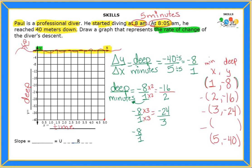I can do one more equivalent ratio by multiplying by 4 — I get negative 32 and 4. That means when four minutes pass by, Paul is going to be 32 meters underwater. The last one we already have: five minutes and negative 40. Now we're going to complete the graph using those ratios I found.